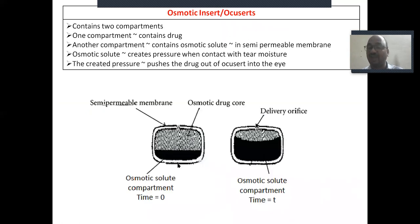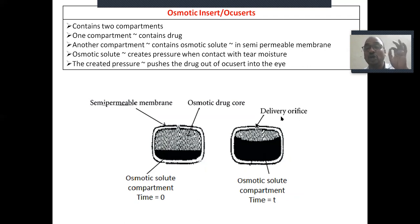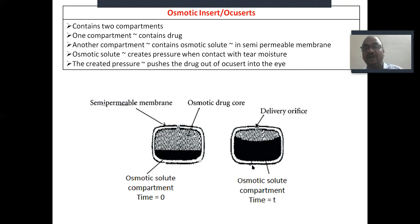The osmotic pump insert has two chambers. One chamber contains an osmotic solute, or osmotic agent, which draws water from the eye. When it absorbs water it swells, and when it swells, the drug is delivered out through the delivery orifice into the eye.